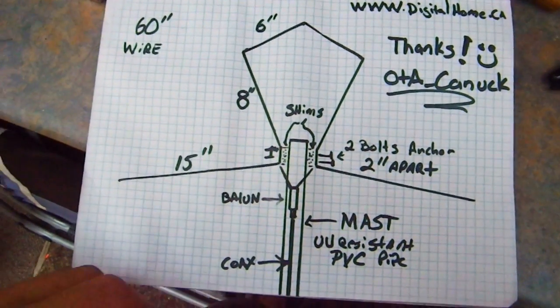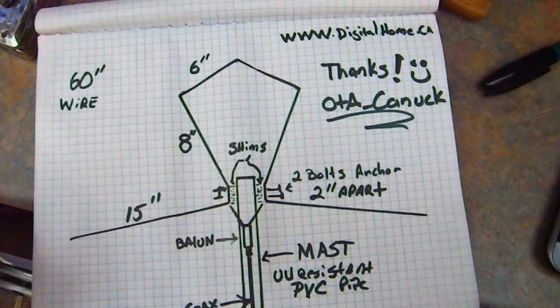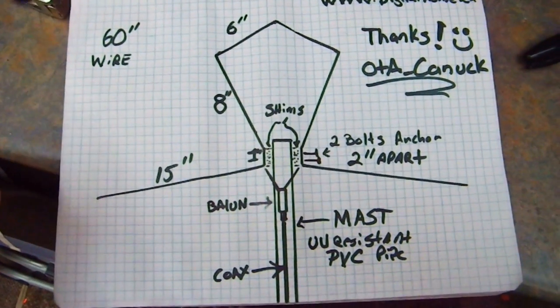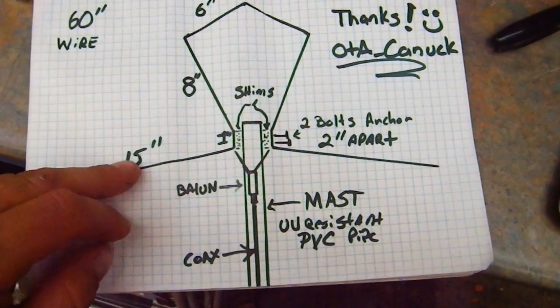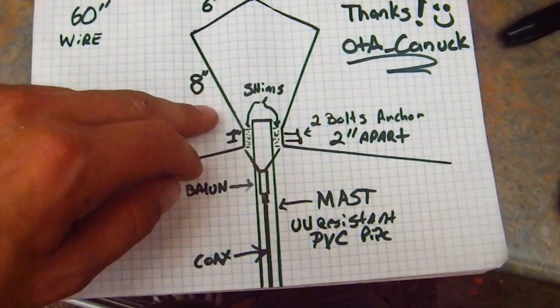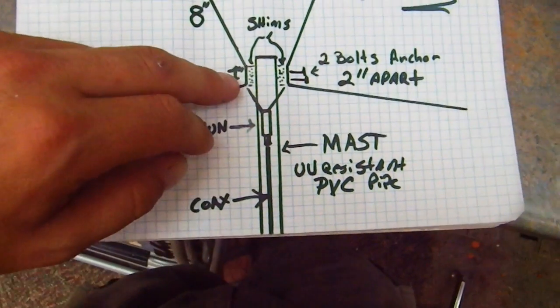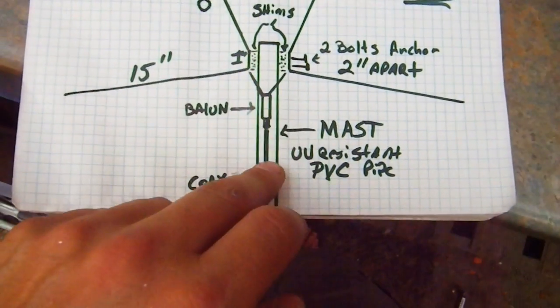So this is the antenna I'm going to build. It's very simple, it uses 60 inches of wire. I'm using 4-gauge copper grounding wire because it's nice and thick. These are the dimensions: bottom legs 15 inches, middle is 8, top 6, and there's a 1-inch section in the middle. Now this 1-inch section I'm going to hammer it flat so I can attach it to the mast and put two bolts into it so it doesn't wiggle back and forth.